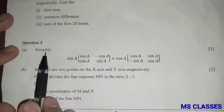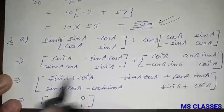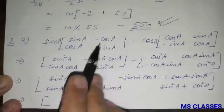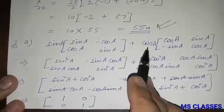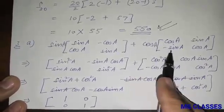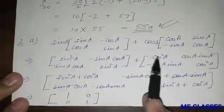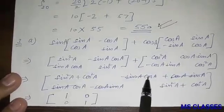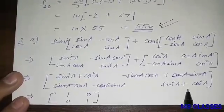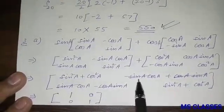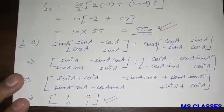Next question, part one: simplify the given expression. Multiplying each term gives sin²A − sin A cos A, sin A cos A, sin²A and cos²A, cos A sin A, minus sin A cos A, cos²A. Adding both parts, sin²A + cos²A terms equal 1, and the cross terms cancel to 0, giving a simplified result of 1.